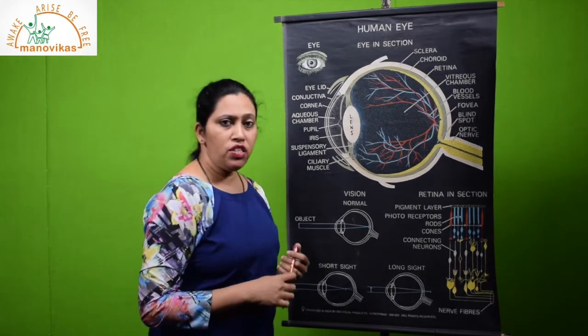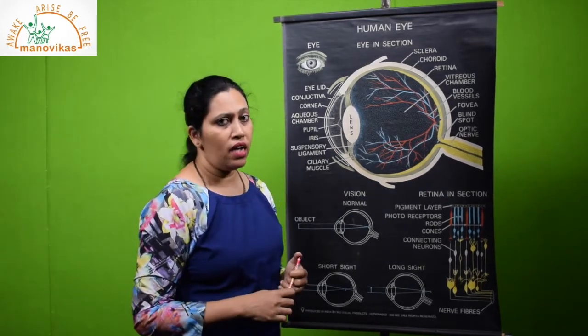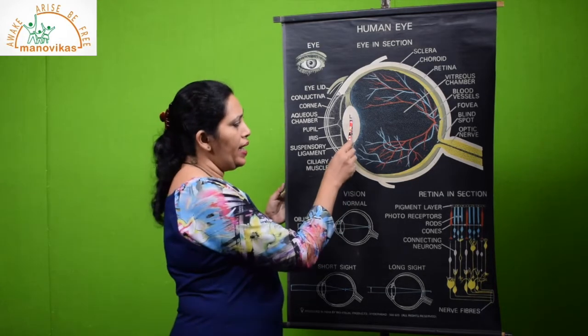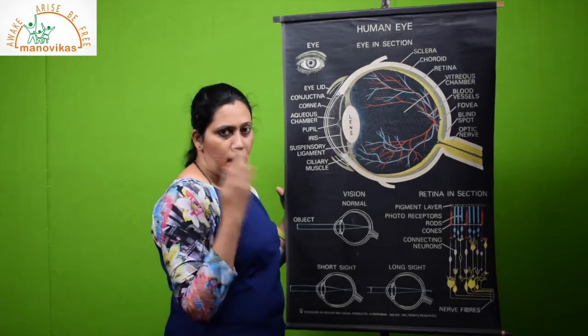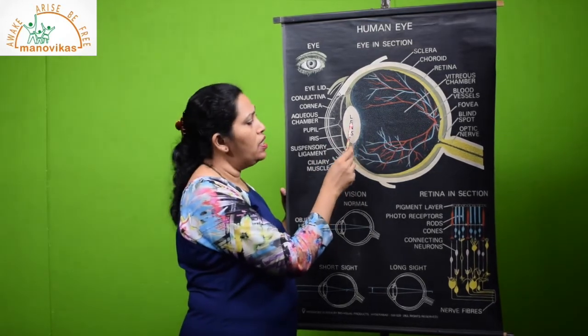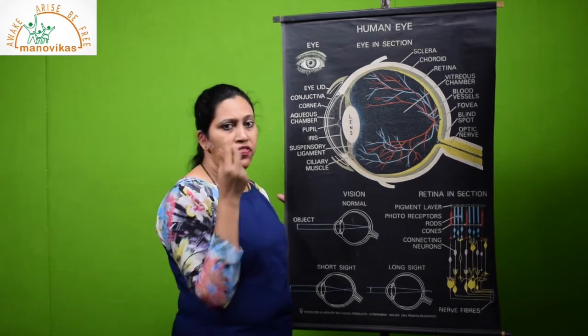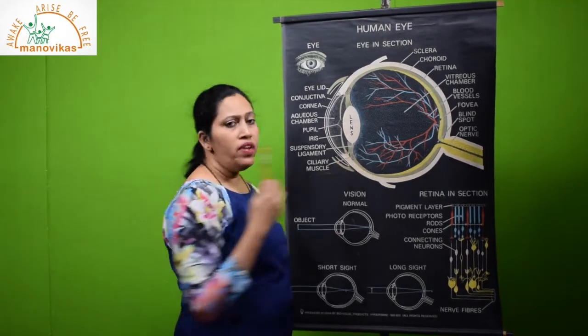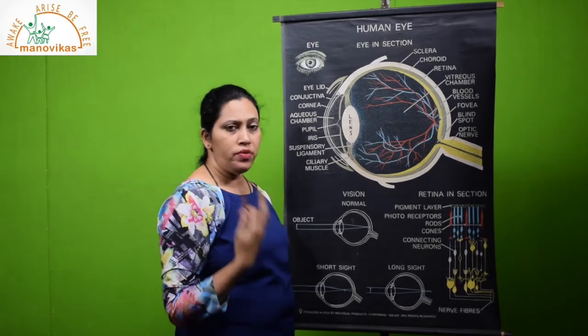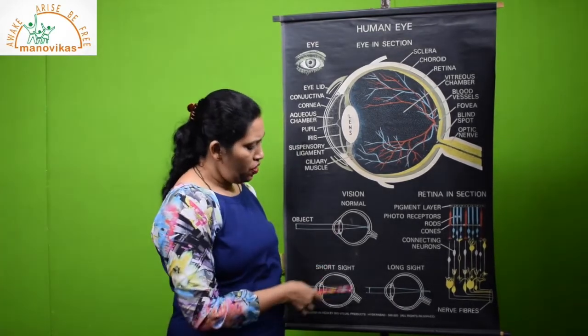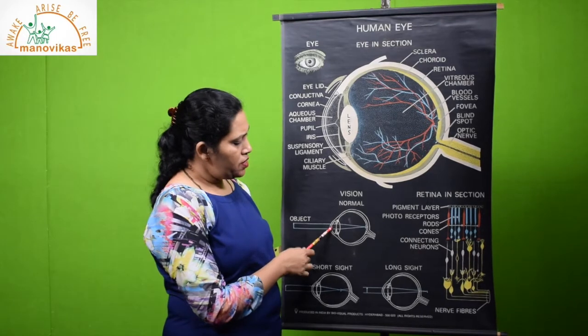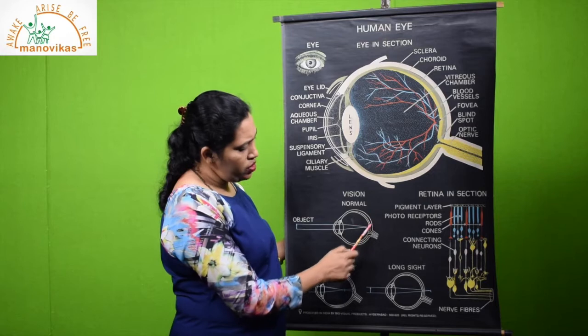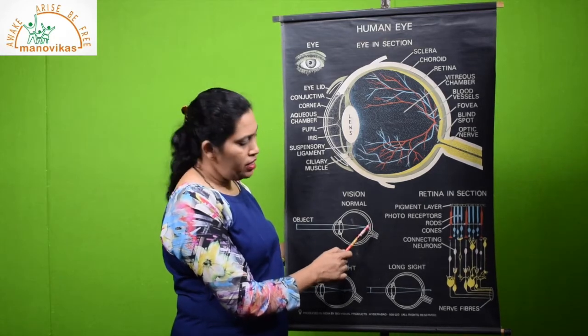There are some diseases of the eye which we'll be doing in the higher classes. I'll just tell you some. One is cataract. When this lens, it's transparent and light can pass through it, this becomes opaque as if it is turbid, like white. So the person will find it difficult to see objects.